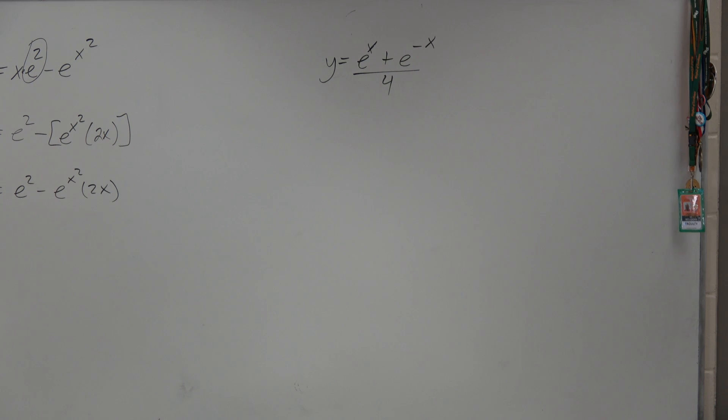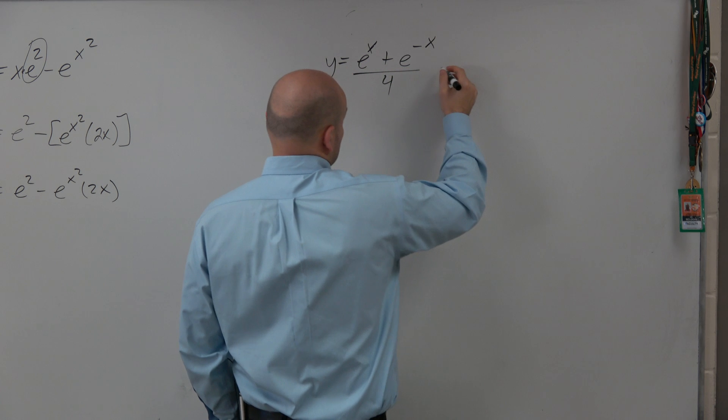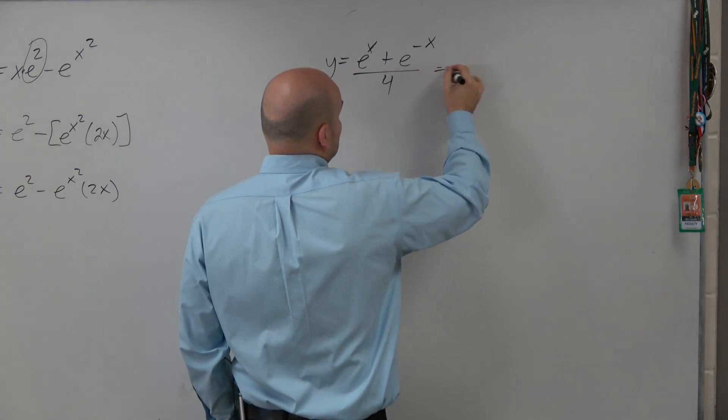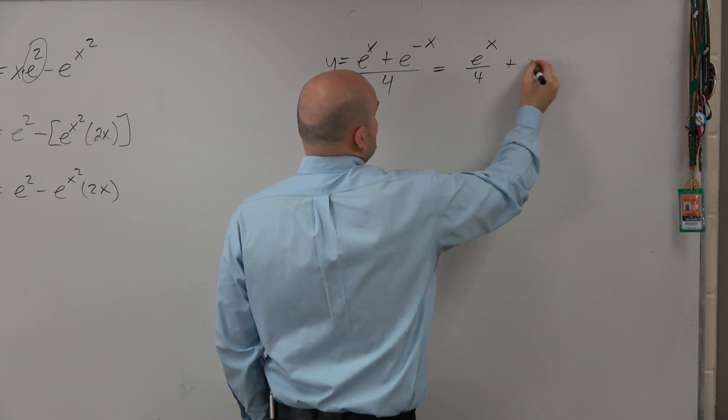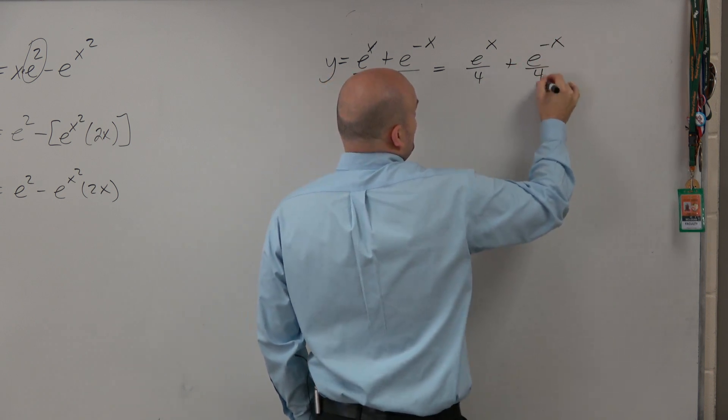y equals e to the x plus e to the negative x divided by 4. So the best thing I would do in this example, you guys would agree with me that this is really e to the x over 4 plus e to the negative x over 4.